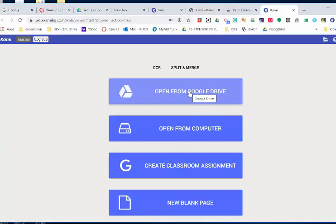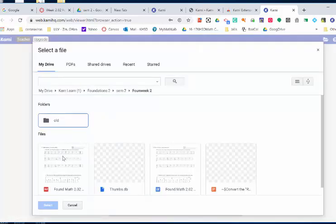You're going to open your Google Drive from Kami. Find the document in your Google Drive and select it.